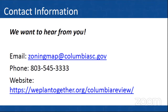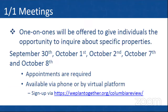The one-on-one meetings right now are currently being offered on the 30th, October 1st, the 2nd, the 7th, and the 8th. You can always add more if needed. Appointments are required — there's a sign-up sheet at weplantogether.org, or you can contact us by phone or by email at zoningmap@columbiasc.gov to sign up.